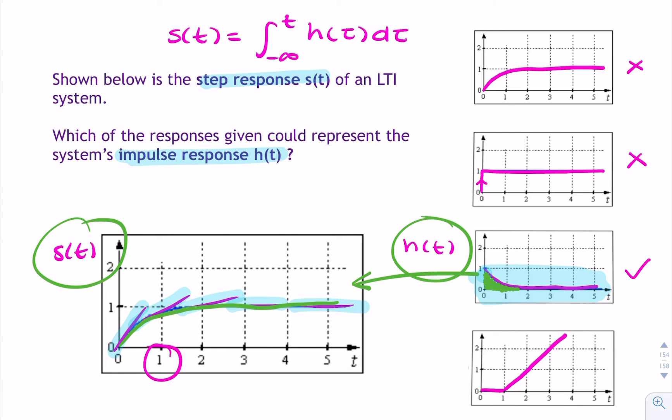So this question can be asked either way. We can start with the step response and ask for h(t), or we can start with h(t) and ask for s(t). So in this case, the option is the third one. The correct option is this third one here.